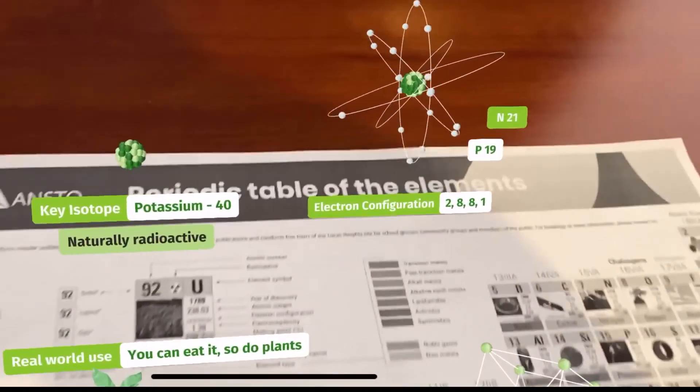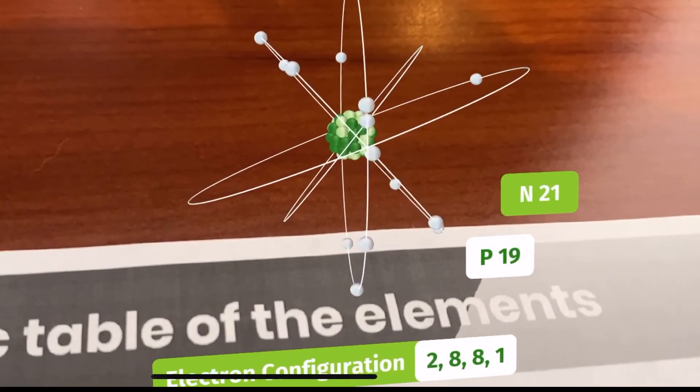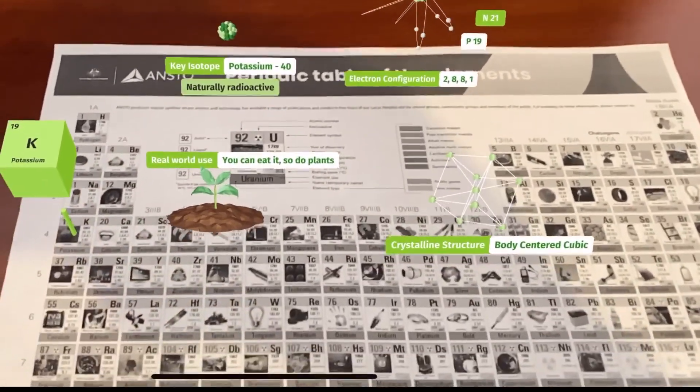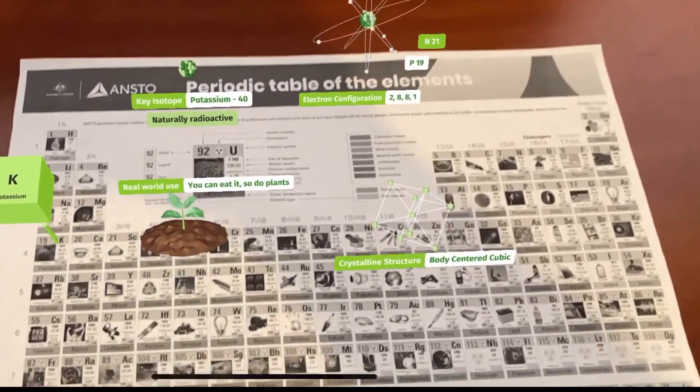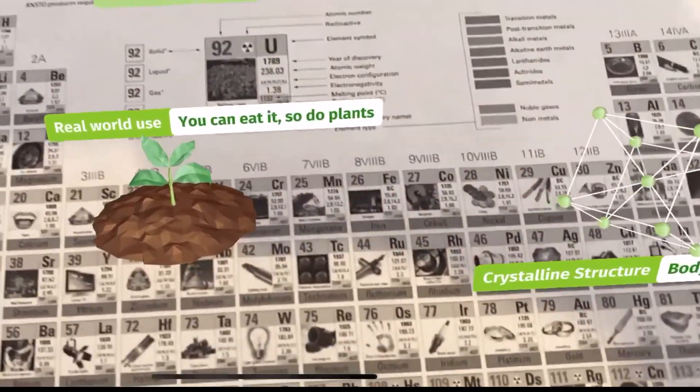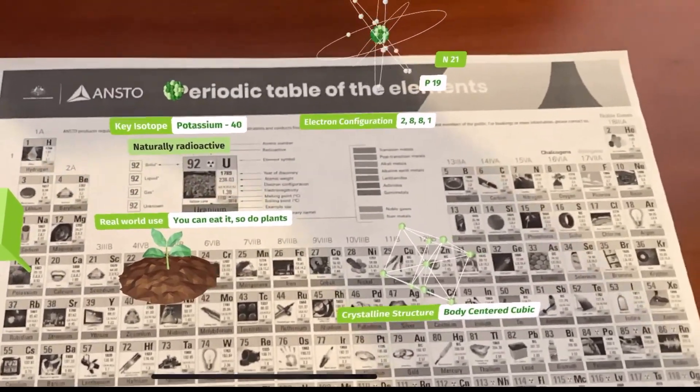Potassium is a key nutrient for life. It's known for its health benefits, but potassium-40 is a naturally occurring isotope that emits radiation. In fact, eating a banana, which is full of potassium, will give you a harmless dose of radiation.